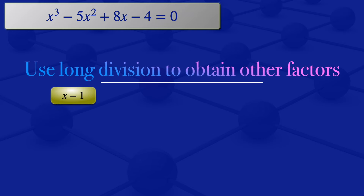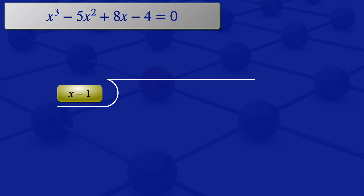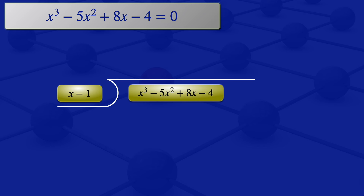The next step is to obtain the other factors using long division. We write x minus 1 as the divisor, and the dividend is x cubed minus 5x squared plus 8x minus 4. We look at the highest power of the divisor, which is x, and the highest power of the dividend, which is x cubed. Dividing x cubed by x gives us x squared, which we write on top. Multiplying x minus 1 by x squared gives x cubed minus x squared.